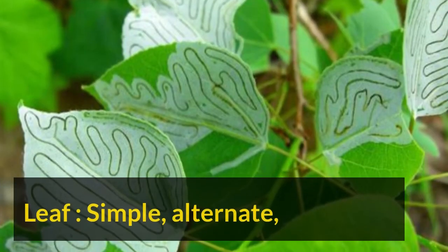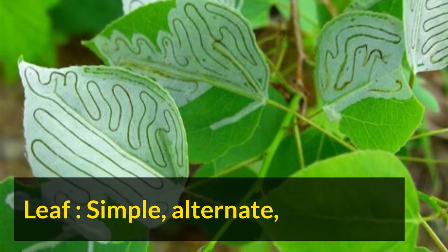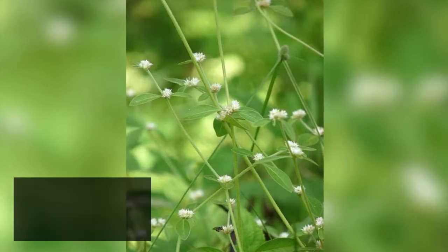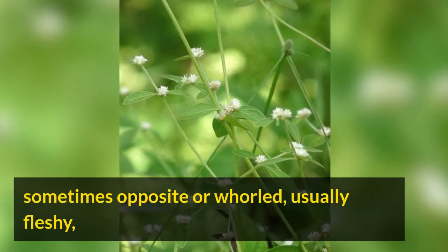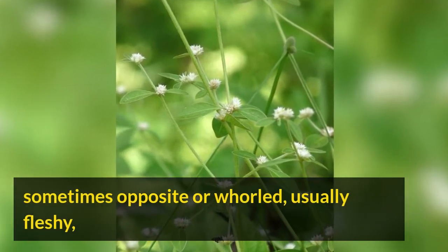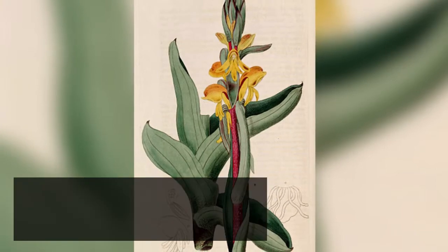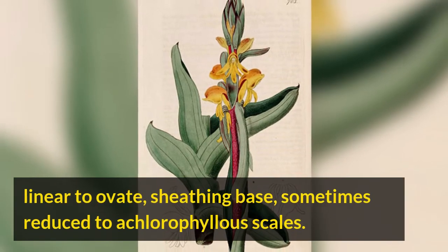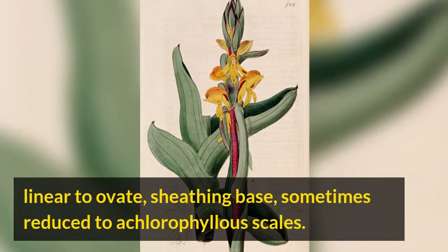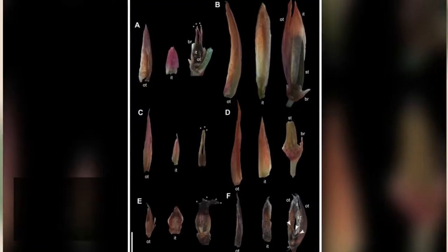Leaf: simple, alternate, sometimes opposite or whorled. Usually fleshy, linear to ovate, with sheathing base. Sometimes reduced to achlorophyllous scales.